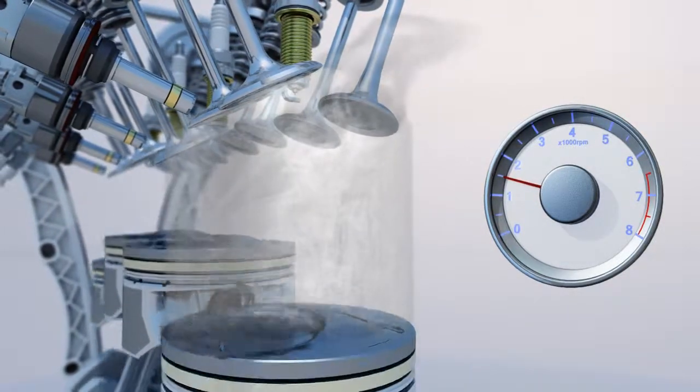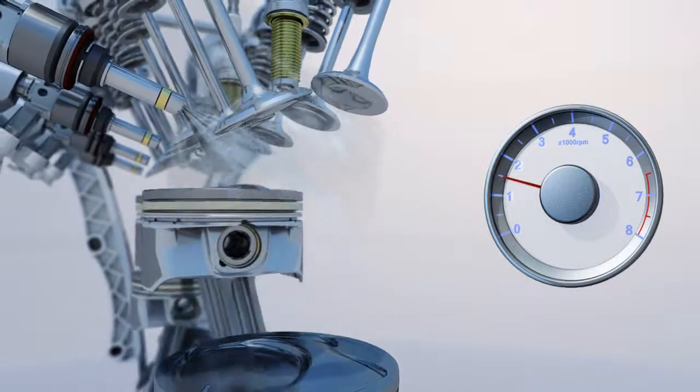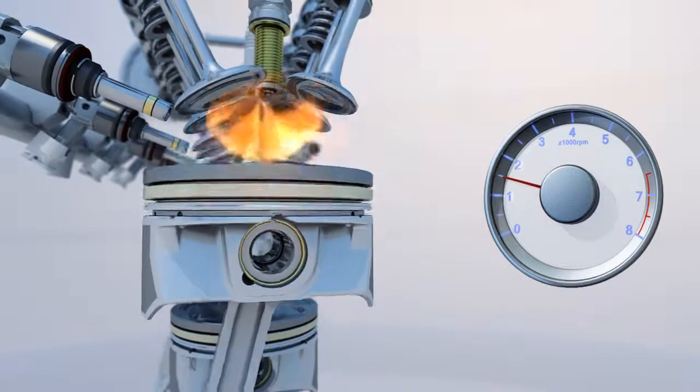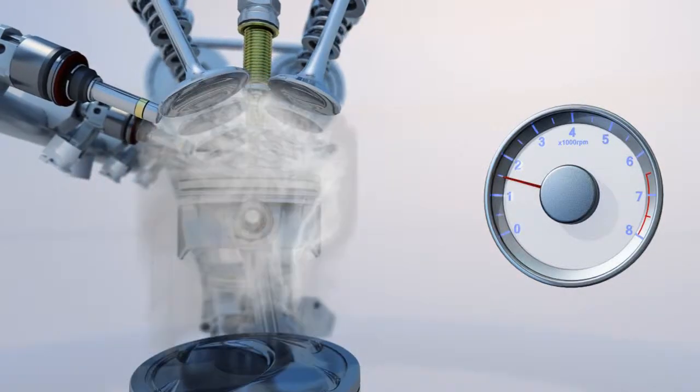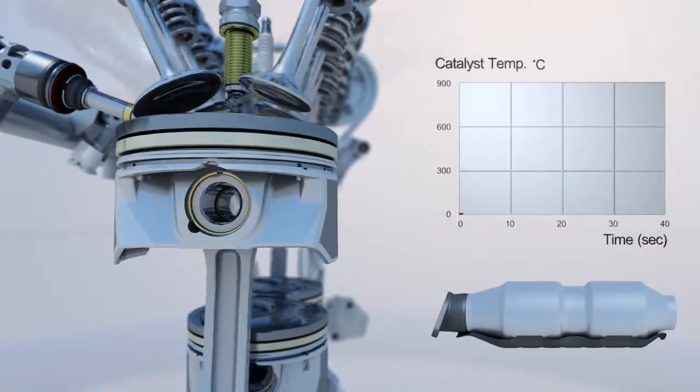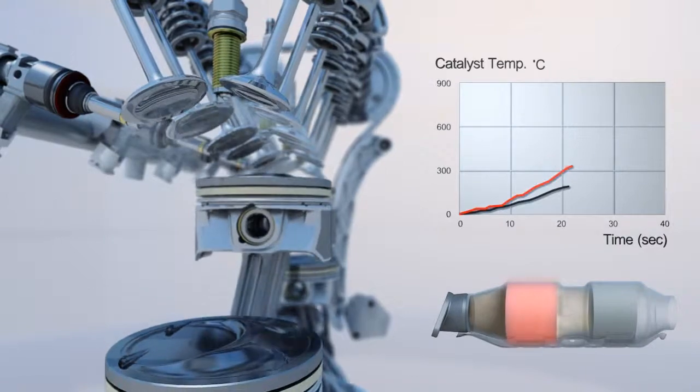After the start, the split injection helps to obtain stable combustion even with late ignition to increase exhaust energy. This increased exhaust energy lights off the catalyst faster by more than 50%. Thanks to the fast light off, exhaust emission is reduced.